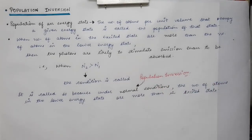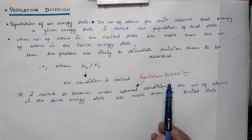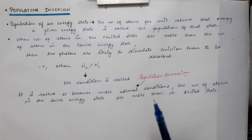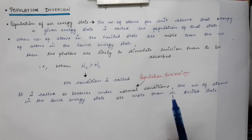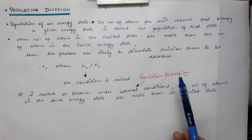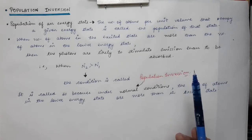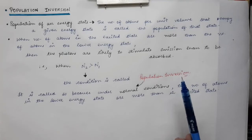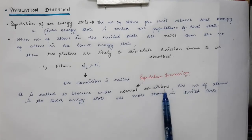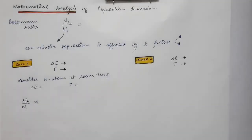We call it population inversion because under normal conditions the population of the lower level is higher than that of the excited state, since the excited state is unstable compared to the ground state. For lasing action to occur, we must invert this normal distribution — making the population of the excited state greater than that of the ground state — hence the term population inversion.